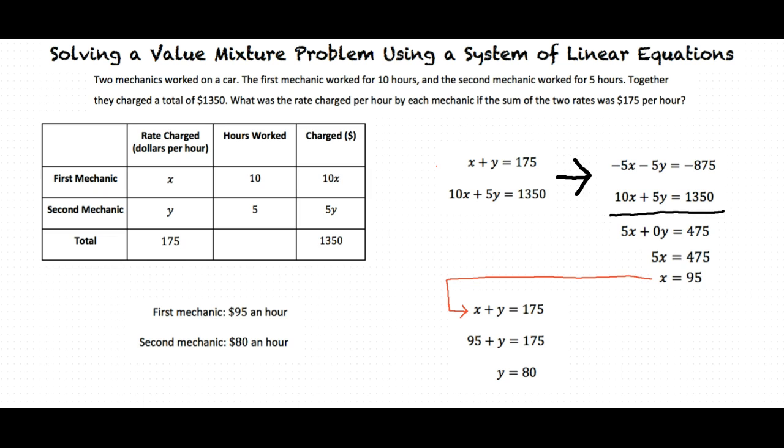First, we identify what the problem is asking us. Next, we gather all of the information our problem is giving us, and organize it so it makes sense. After that, we use all the data we were given to create two linear equations that relate to the question we are trying to answer. And lastly, we solve the system of equations by finding what one variable equals, then substitute that value into one of the equations to find what the other variable equals. And this gives us our solution for the problem. Is that right?